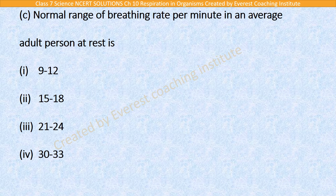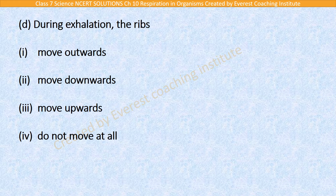Part 4: During exhalation, the ribs move outwards, downwards, upwards, or do not move at all. When you exhale, the rib movement is inward and downward — the ribs go inside. So the answer will be option two: the ribs move downwards.